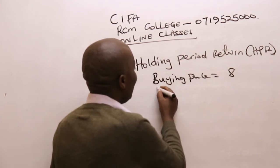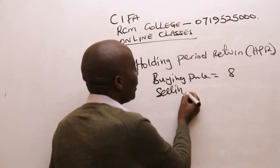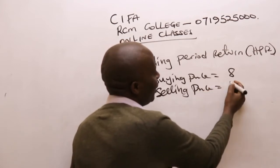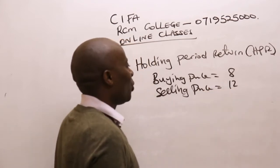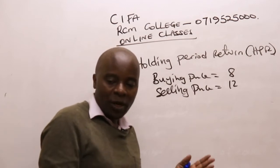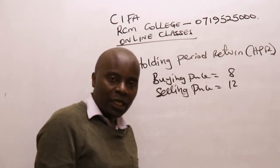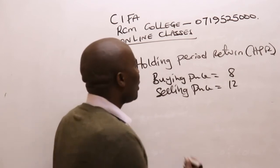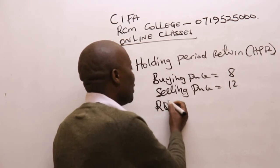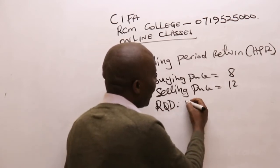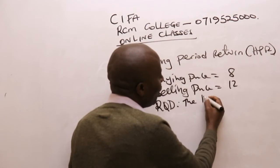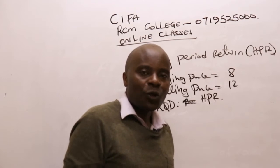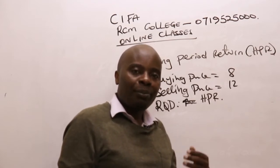And then at the end of the day, you sell this share. The selling price is 12 after say a year — after one year, you are able to sell the share that you bought one year ago for 12 shillings. And then, ladies and gentlemen, you are required here to give us the one year's holding period return.